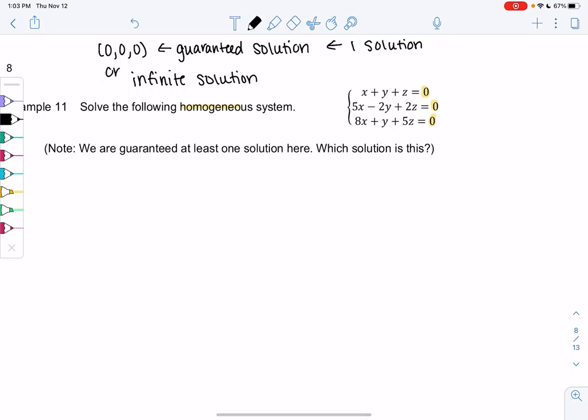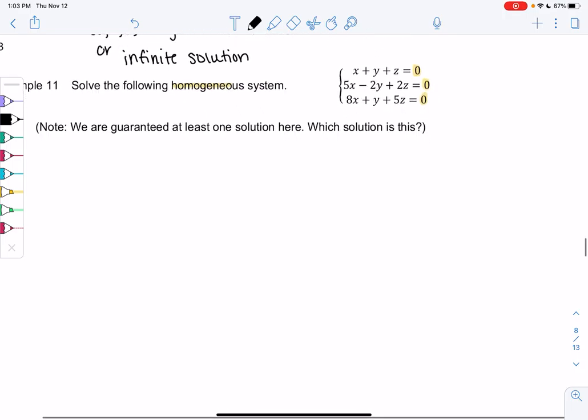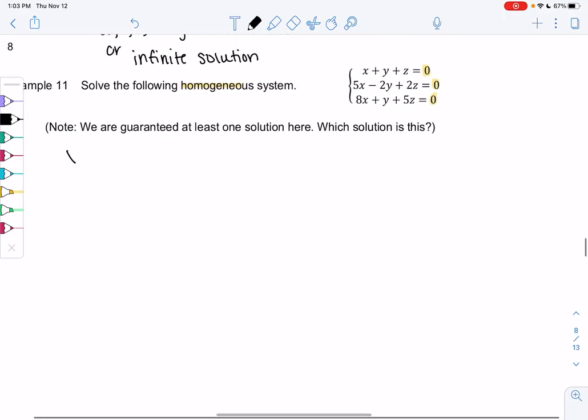Zero, zero, zero just happens to be one of those solutions. Let's practice that triangle method. We have x plus y plus z equals zero, 5x minus 2y plus 2z equals zero, and 8x plus y plus 5z equals zero. We're going to try to make that triangle.